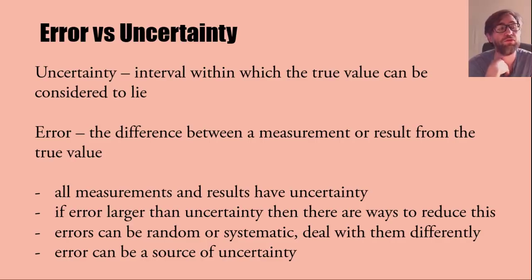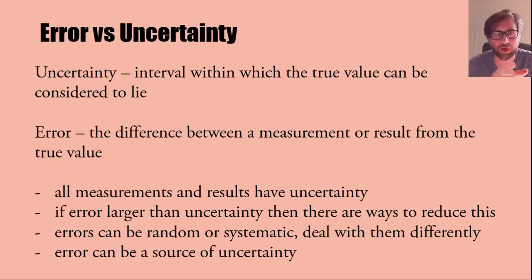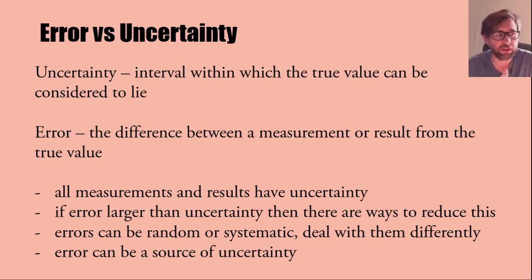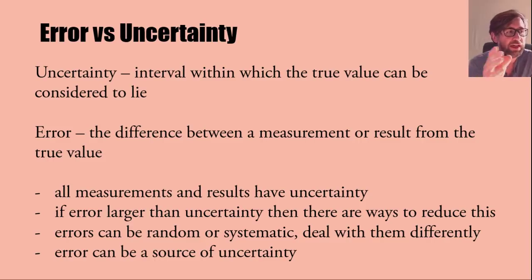Uncertainty is the interval within which the true value can be considered to lie. You measure something and you're never 100% sure — all measurements have uncertainties. The error is the actual difference between what you've got and the real value. You might not know the error, but your calculated value is not the true value — that difference is the error. It's not that you made a mistake; it's simply the difference between the true value and your result.